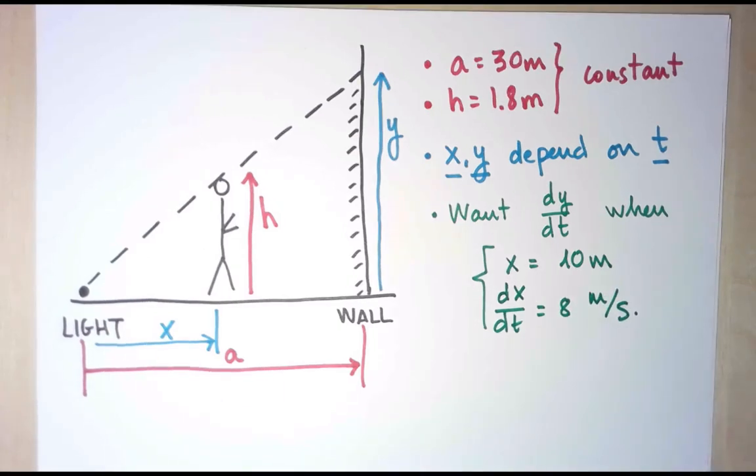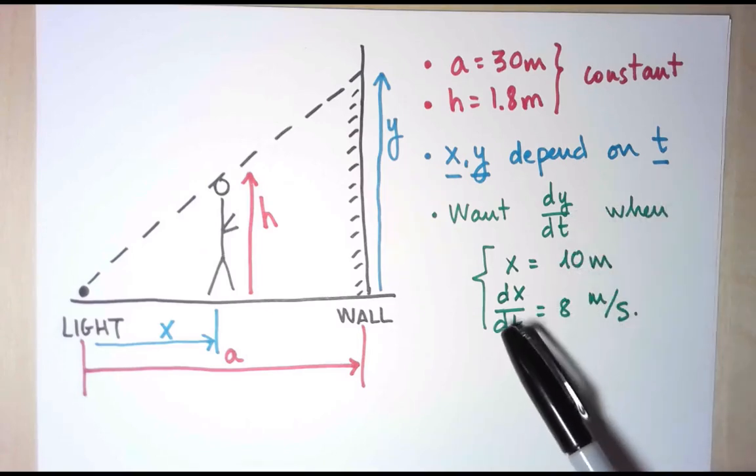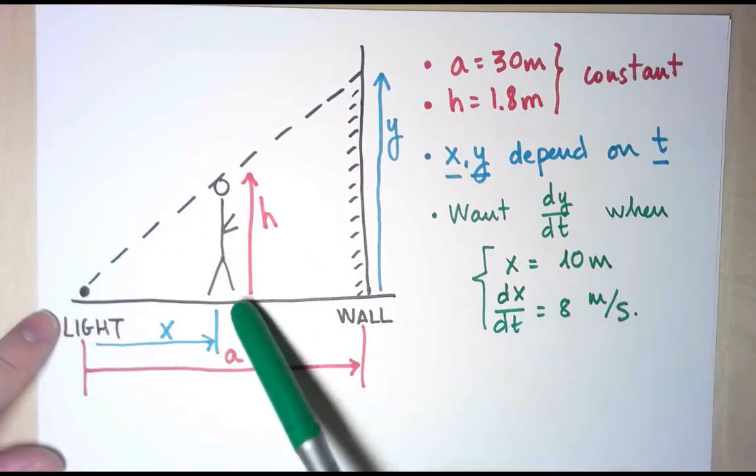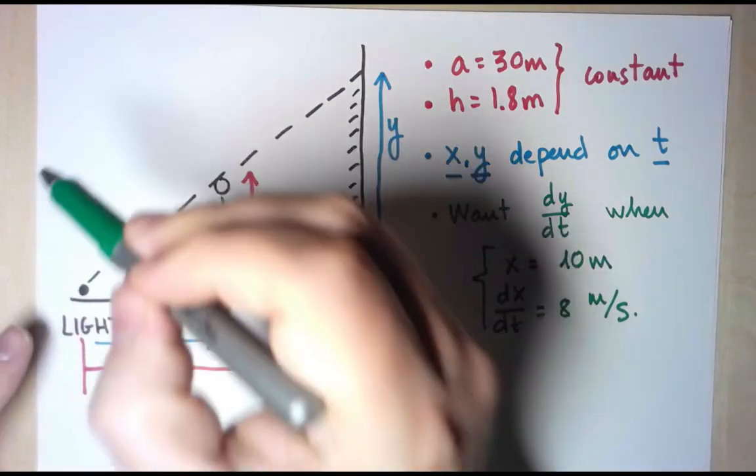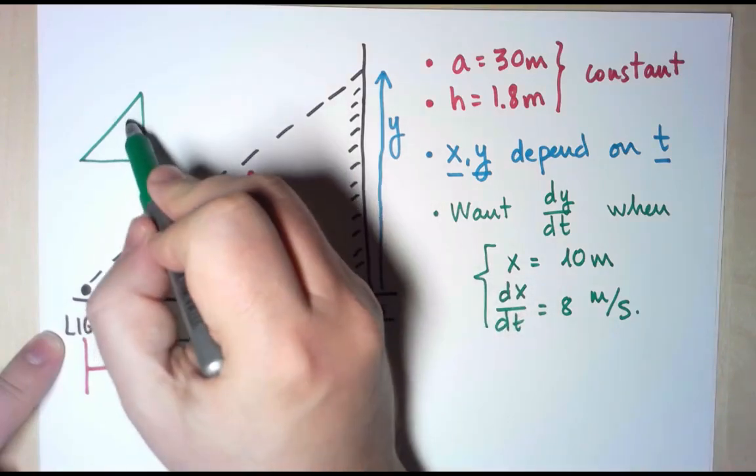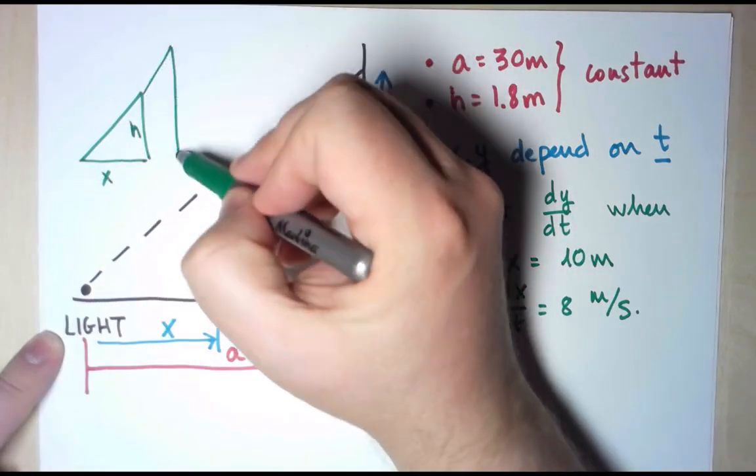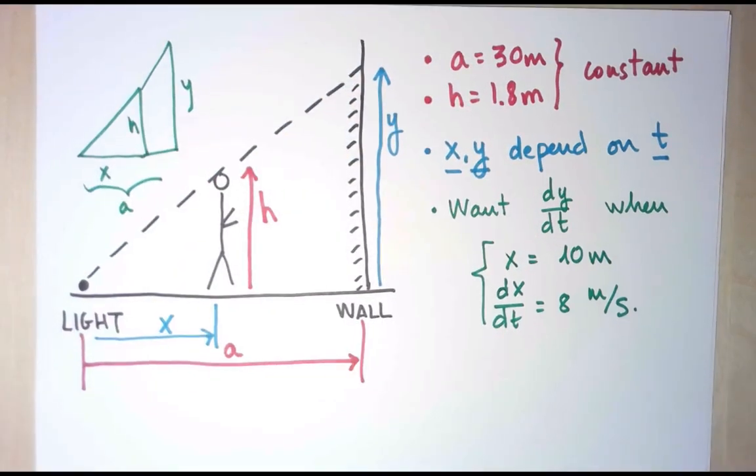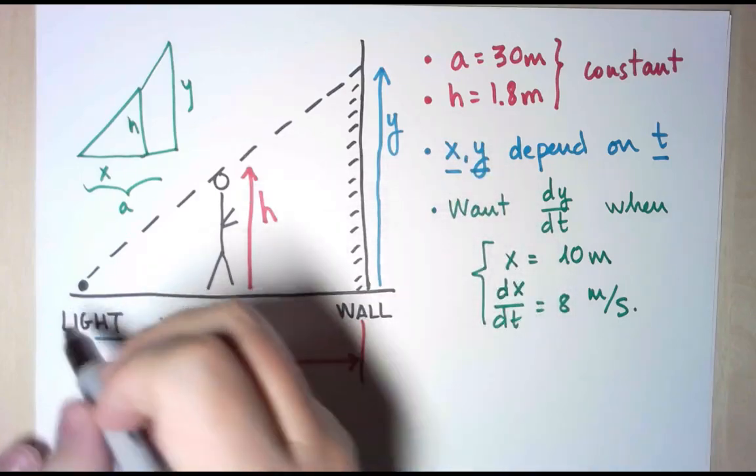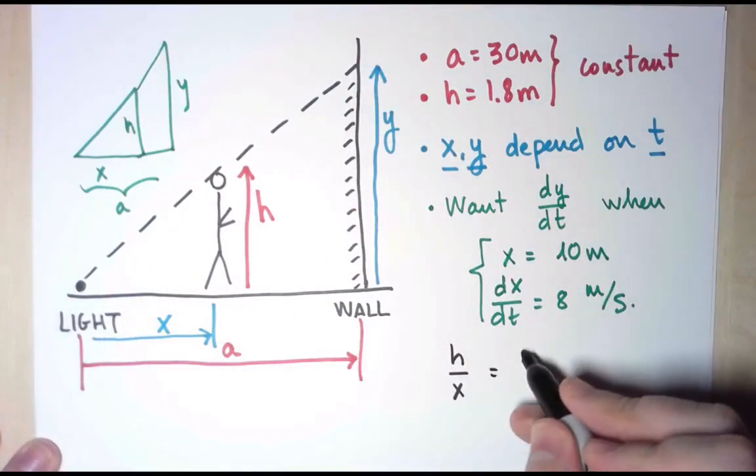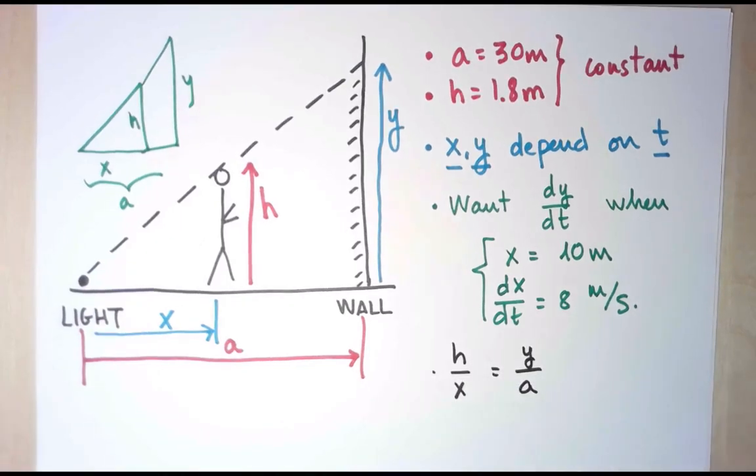Now, I need a relation between the derivative of Y and the derivative of X. I can get one if I first get a relation between Y and X. And luckily I can do that. Because I notice that here I have two right triangles that are similar. I have the triangle with height h and base x, and then I also have the triangle with height y and base a. And they are similar. So by similar triangles, I can get the equation that says that h over x is going to be equal to y over a. And that completes the setup.